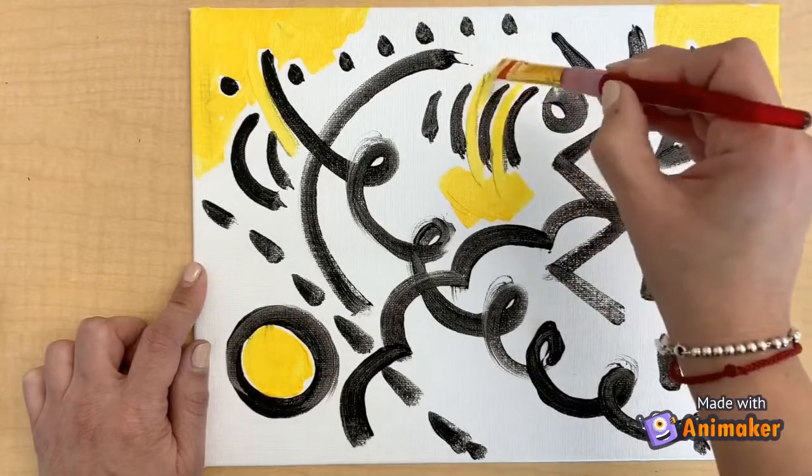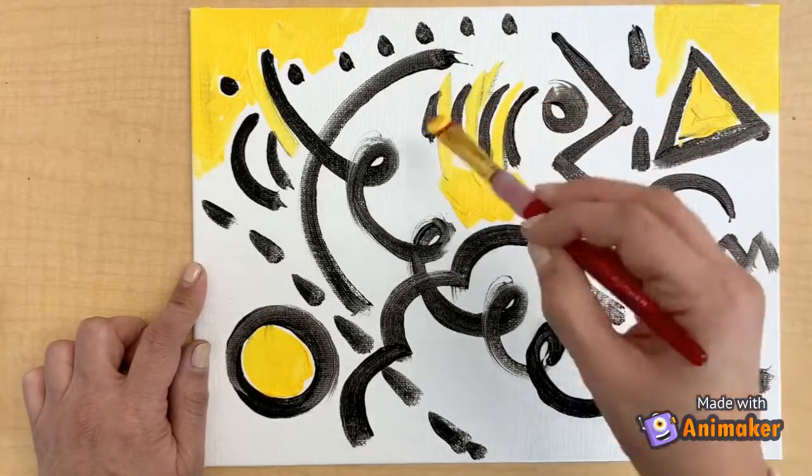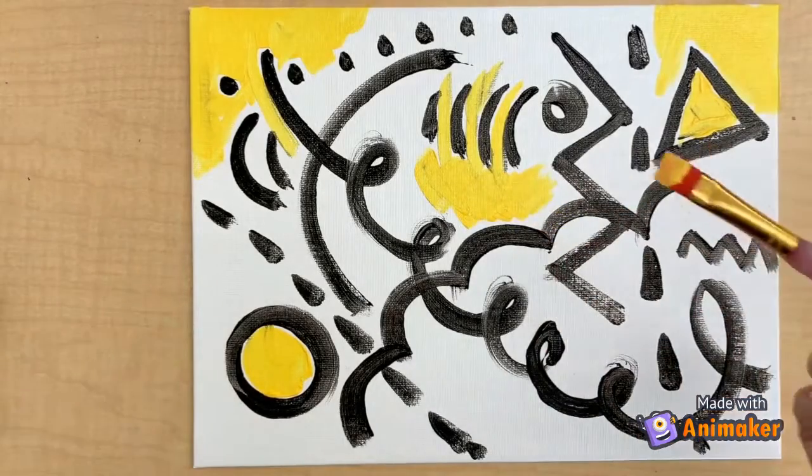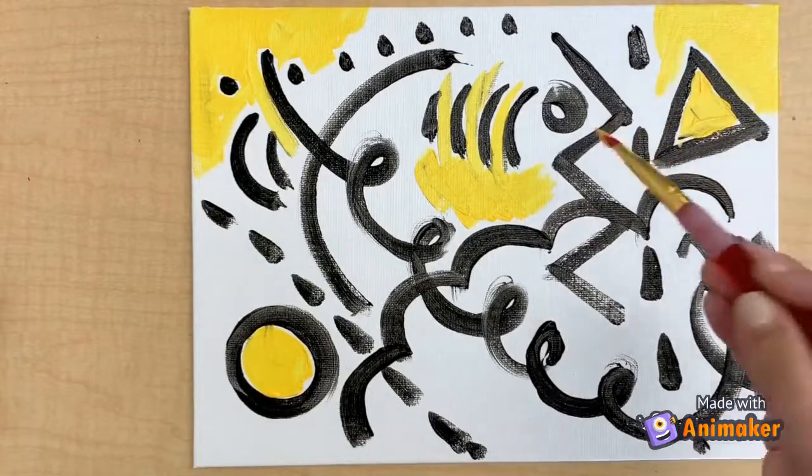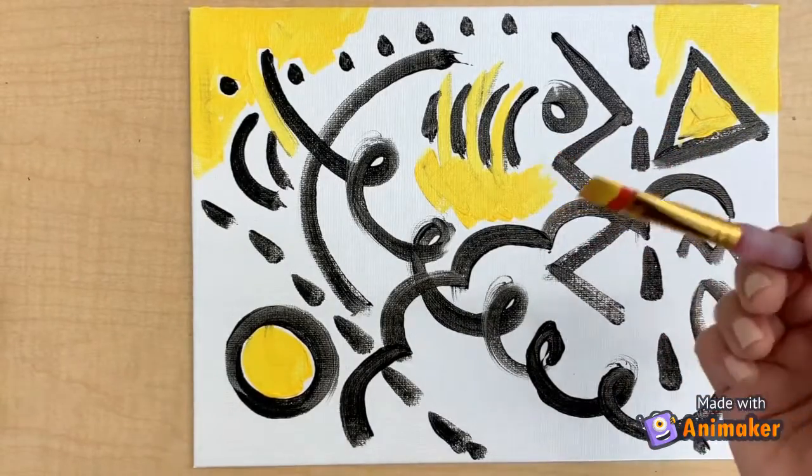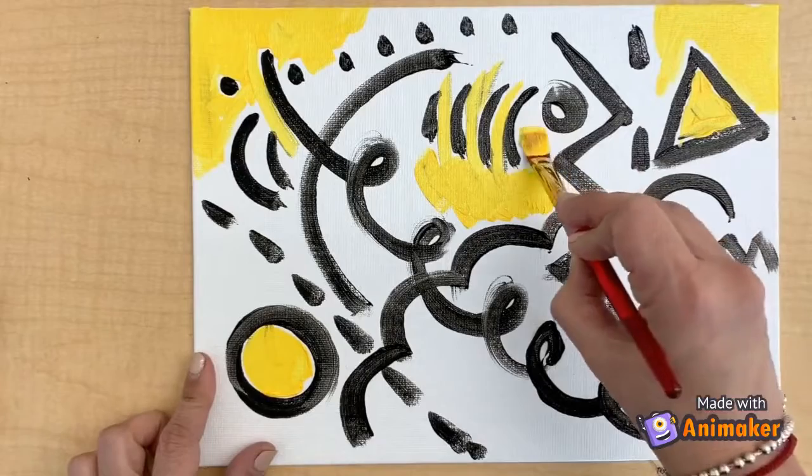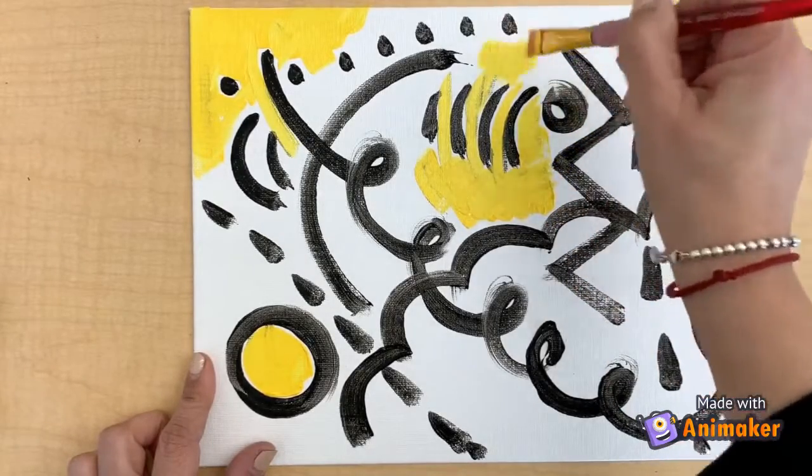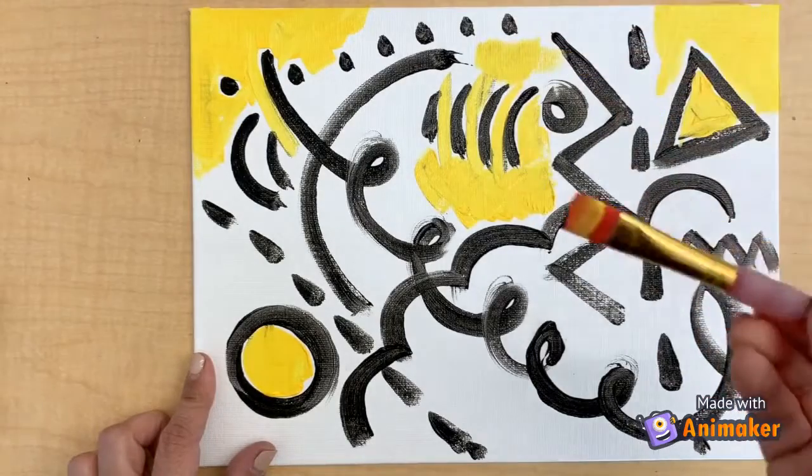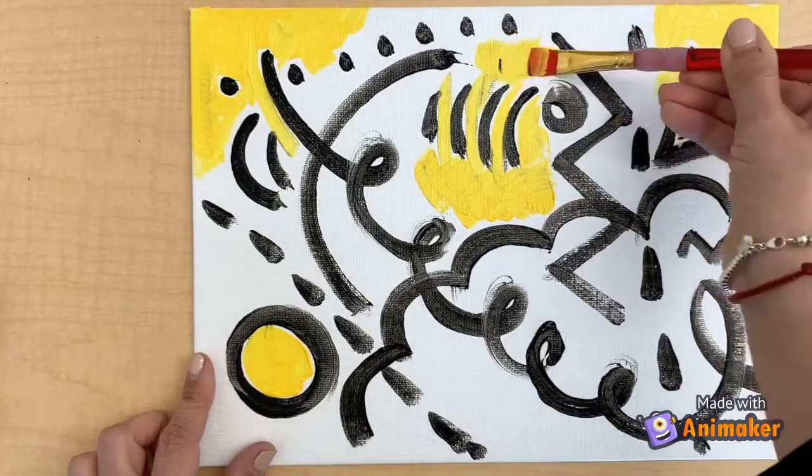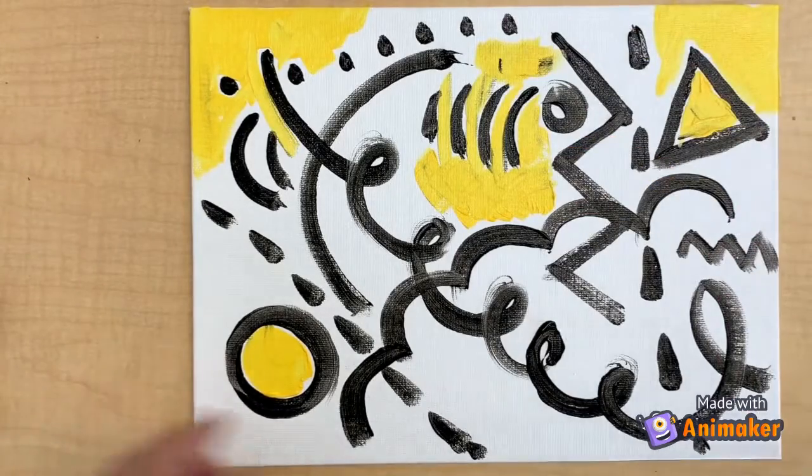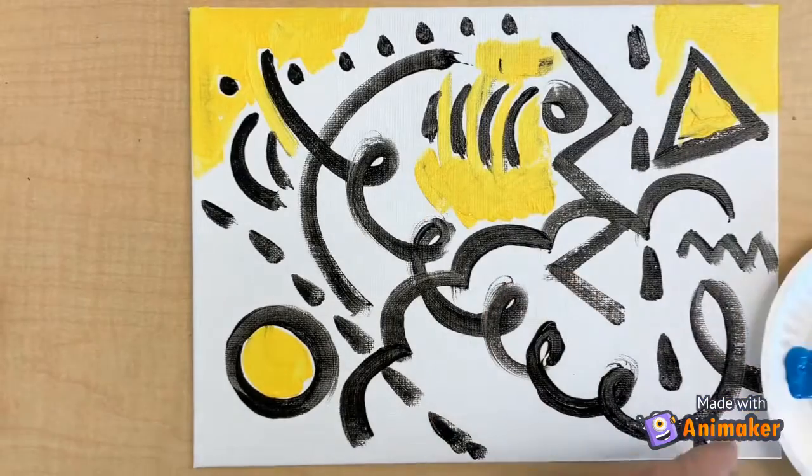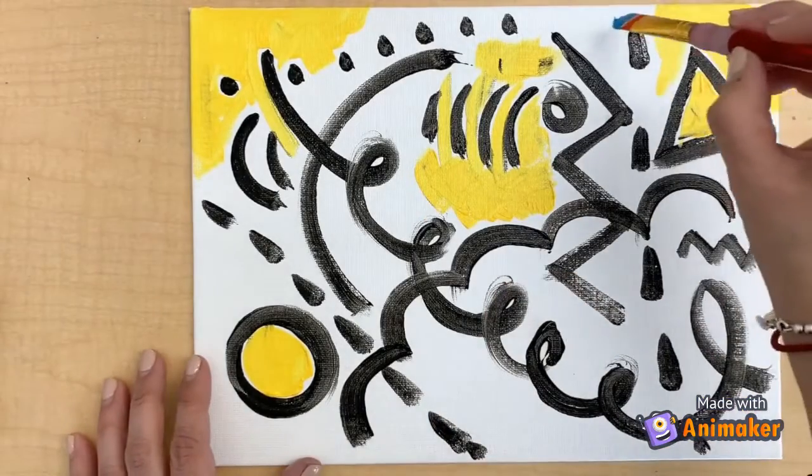And making sure that we use the yellow in different areas before we move to blue. Okay. And I think we're going to start filling up the other areas with the yellow. And when we're done with yellow, we're going to just wipe off the excess paint on our paper or canvas.